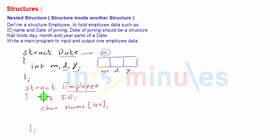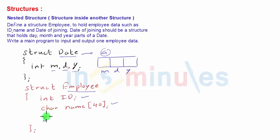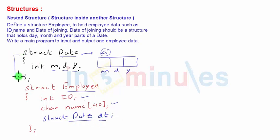We can define as many structures or unions as we want in our program. Structure 'employee' has three parts as stated: ID (an integer), name (a char array, i.e., a string), and the third part is date of joining, which is itself a structure. To define the third member, we use the statement 'struct date dt', so dt will be of type structure date — already defined — and dt itself will be a structure holding d, m, and y.